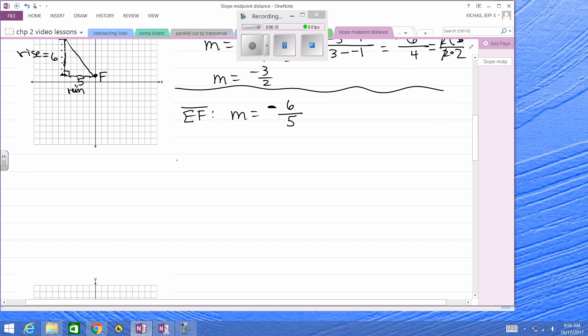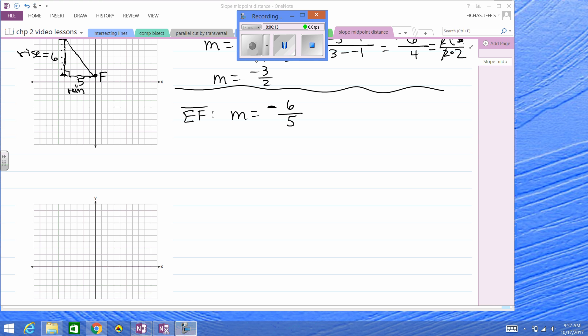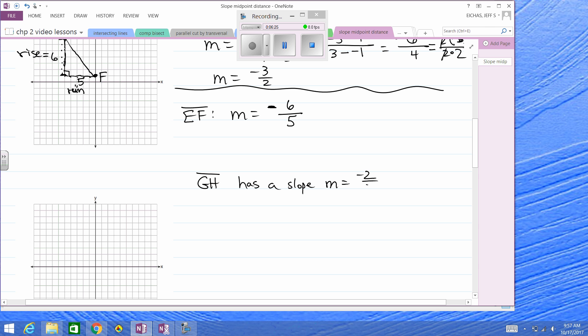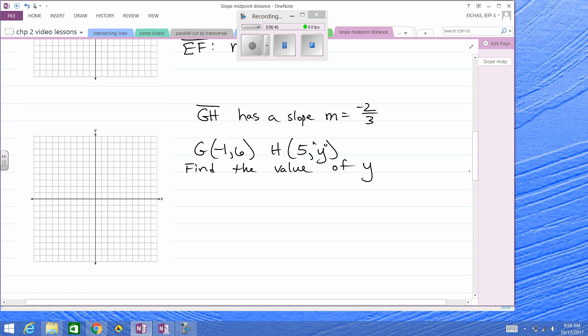All right, so there's other types of problems to do with that. Let's say the slope is given. So you have GH. Let's say GH has a slope that is negative 2 thirds. If G has the coordinates negative 1, 6, and H has the coordinates 5 and we'll call it y, you'd have to find the value of y.